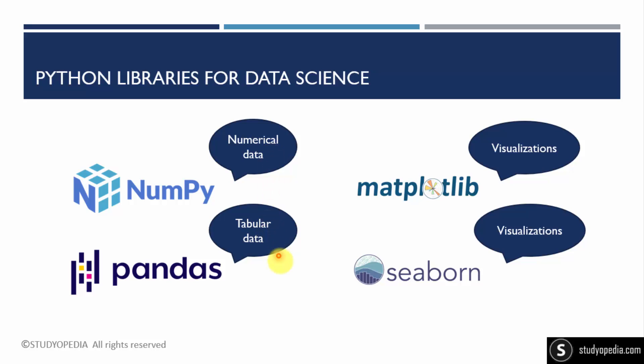With Pandas you can easily work with tabular data like CSV files including rows and columns. If you have a bigger dataset — like a Netflix dataset or Titanic dataset — you can use Pandas to accomplish your work easily. Matplotlib and Seaborn are based on visualizations: you can create bar graphs, pie charts, and histograms. Seaborn is basically an extended version of Matplotlib.